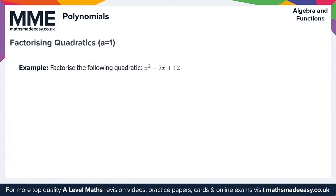Moving on now to factorizing quadratics where a equals one. Factorizing quadratics of the form ax² plus bx plus c when a equals one is quite straightforward. In this example we're asked to factorize x² minus 7x plus 12. Since this is x squared at the front, we know the beginning of each bracket will contain an x. We can see B is negative and C is positive, so both numbers in the brackets will need to be negative.